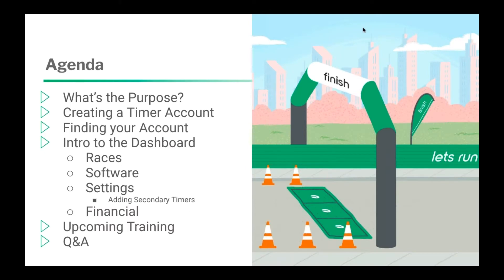Today's agenda covers what is the purpose of a Timer Account and the Timer Dashboard, how to create a Timer Account, where to find your account if it's already created, and then we'll go into the Dashboard itself. There are four tabs underneath the Dashboard: races, software, settings, and financial. I did put an additional bullet point under settings because I think this is the most important thing on the Timer Dashboard, and that is adding secondary timers. Then we'll go through upcoming training, take some time for Q&A, and if needed I can hop out and do a live demo on a Timer Account.